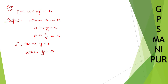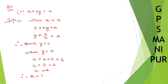When y is equal to 0, x remains as it is, 2 into y is 0, so x plus 0 is equal to 6, therefore x is equal to 6. So when y is equal to 0, x is equal to 6.